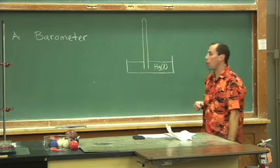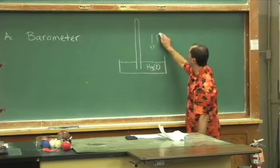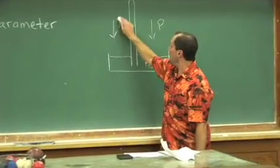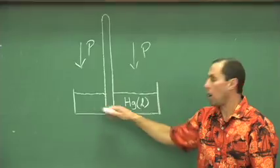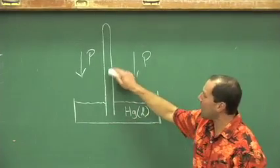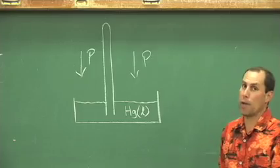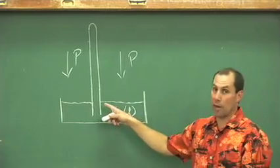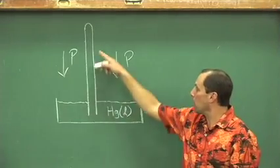But in actuality, what we say in chemistry is we have an atmospheric pressure. And the pressure is pushing down on the pool of mercury, and the mercury can go up because there are no gas molecules, actually very few gas molecules. We can't make a perfect vacuum. So the mercury goes ahead and rises.